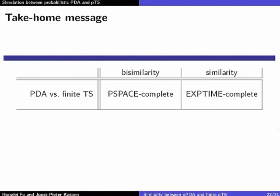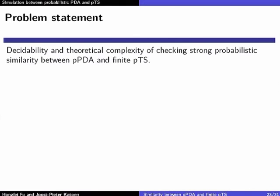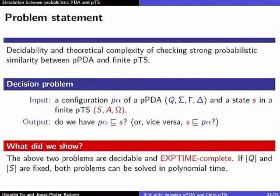The take-home message: in the non-probabilistic setting, bisimulation checking between a PDA and a finite transition system is PSPACE-complete, while simulation is EXPTIME-complete. In the probabilistic case, both bisimulation and simulation checking lie in the same complexity class — EXPTIME-complete. The decision problem is: given a configuration p-alpha of the probabilistic PDA and a state s of a finite PTS, is p-alpha simulated by s, or vice versa? Both directions are EXPTIME-complete, but with fixed control and transition system states, both are solvable in polynomial time.